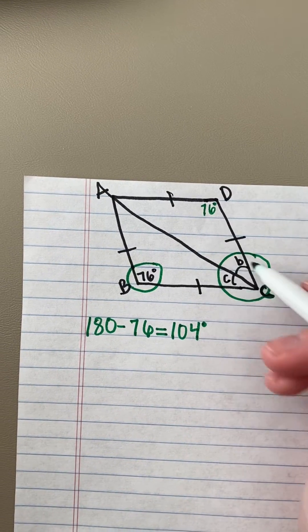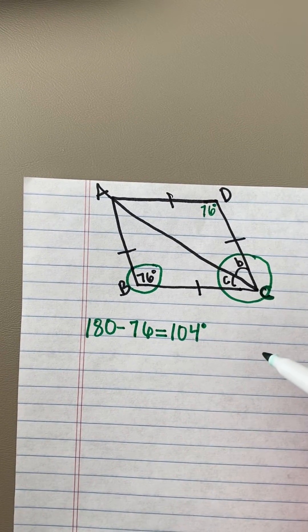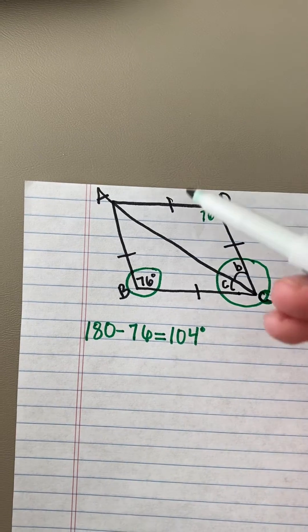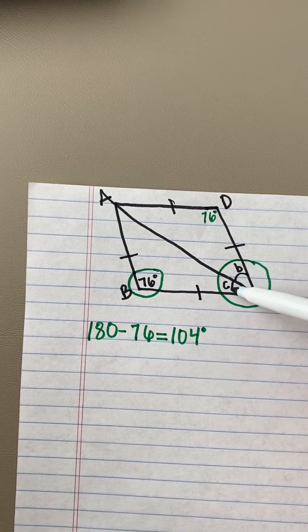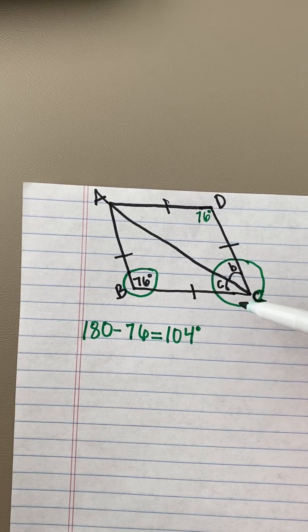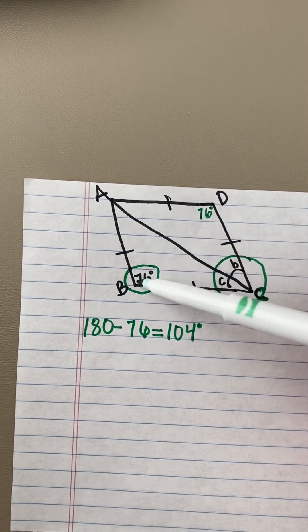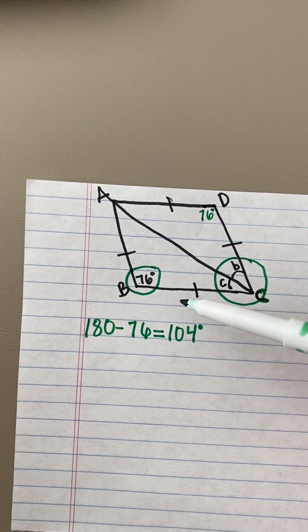So both of these angles together equal 104 degrees. And as I am looking at this, the reason I knew that B and this lowercase C angle were equivalent was because I have two identical isosceles triangles.